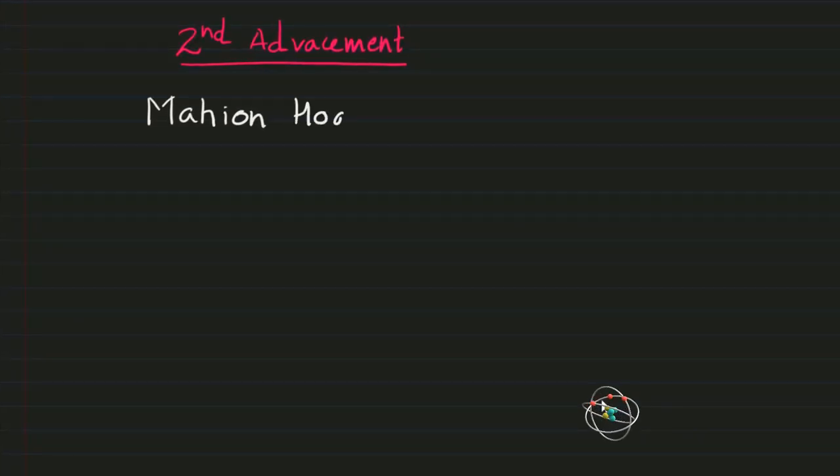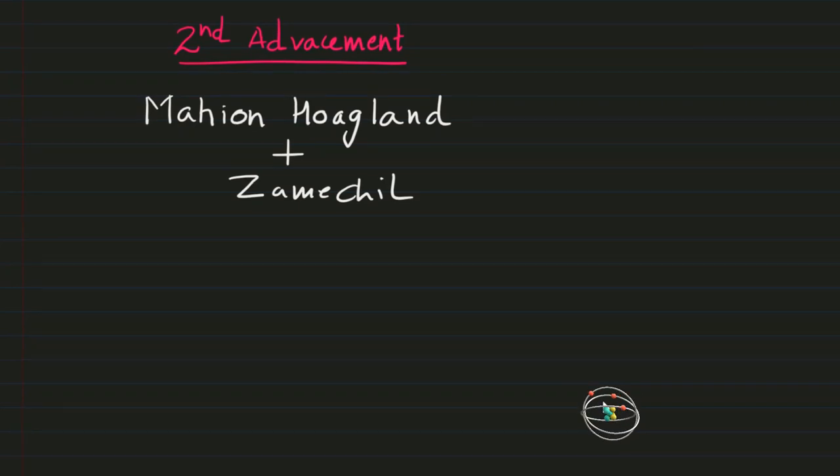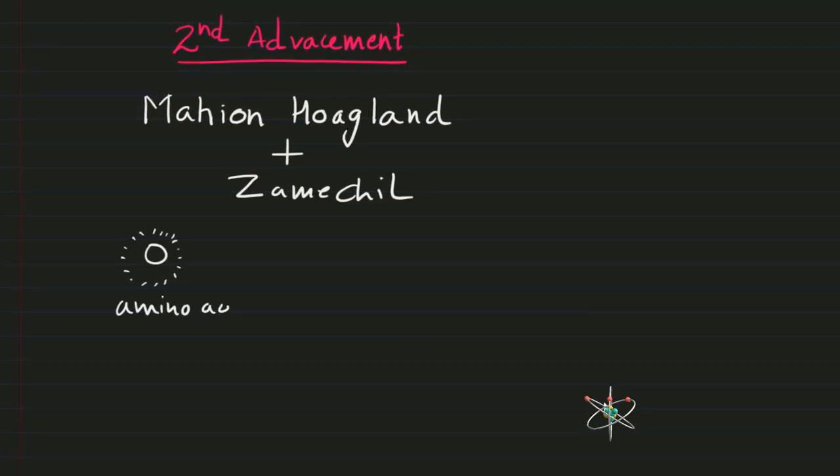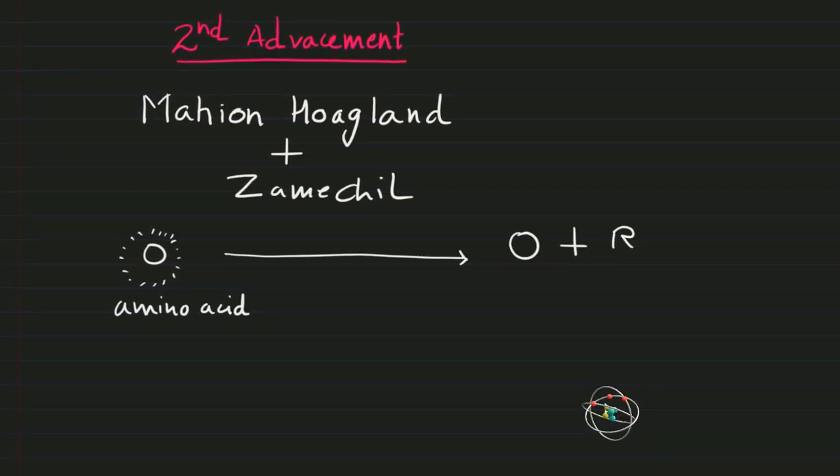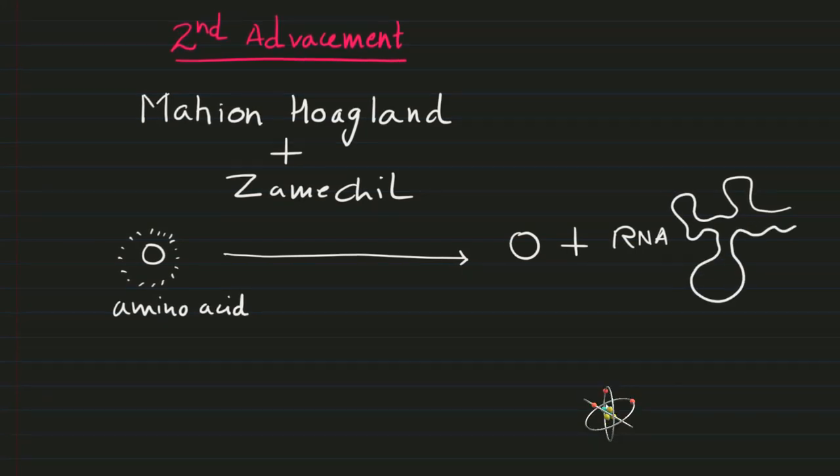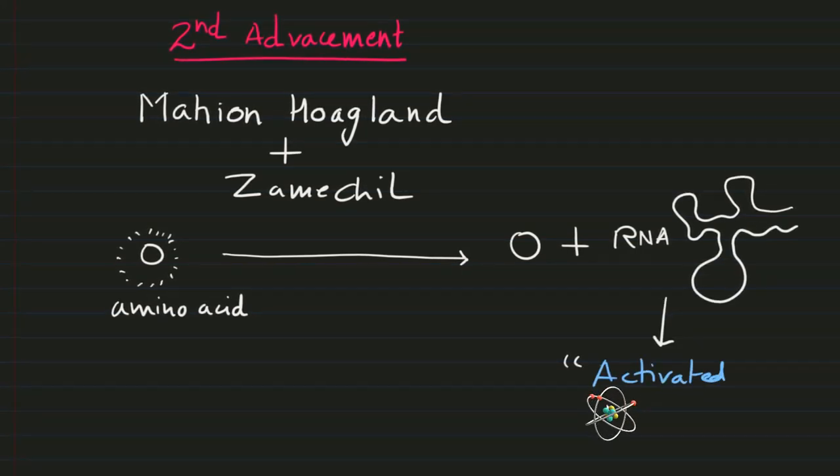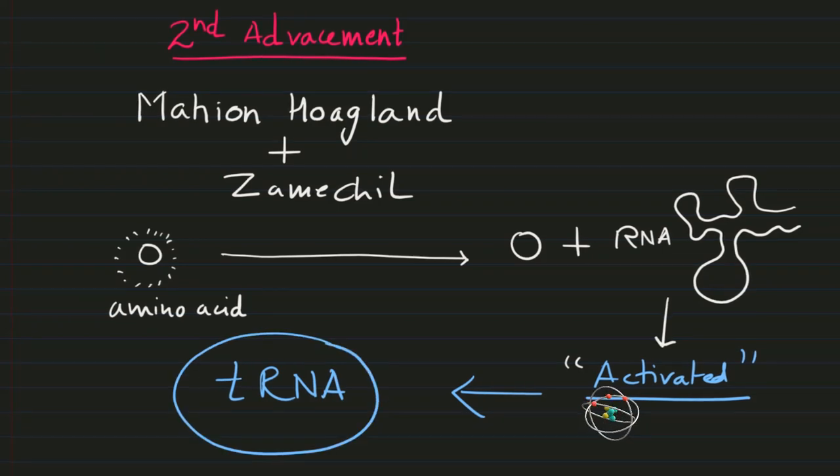Second major experimental evidence was provided by Mahian-Hogland and Zemeck where they took radio-labeled amino acids and found that they bind to an RNA molecule and get activated. Later, this molecule was found to be tRNA or transfer RNA.